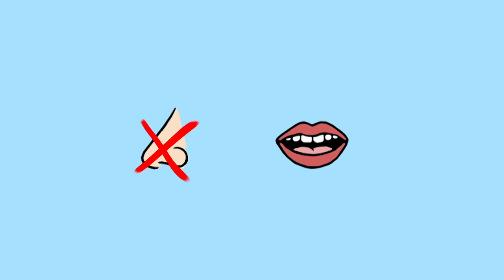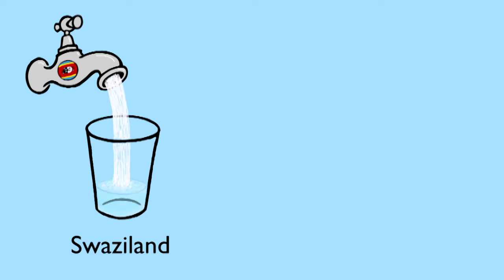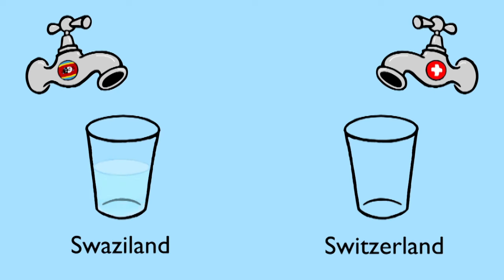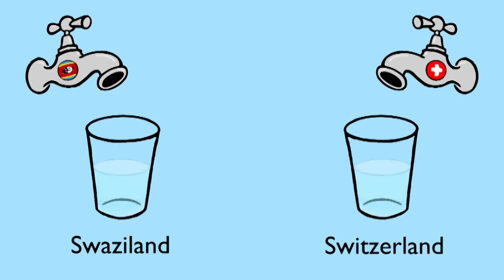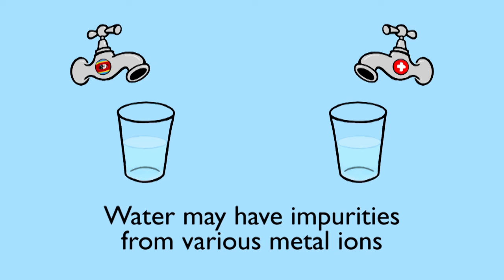Water is a colourless and transparent substance. When it is pure, it has no smell and no taste. If you've ever thought that one type of tap water tastes different to another, you're not wrong. Tap water in different areas may have slight impurities from various metal ions.